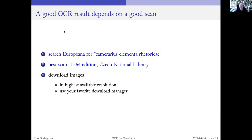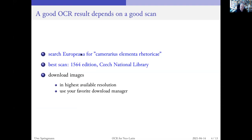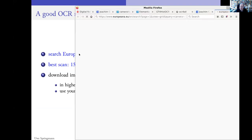A good OCR will always depend on a good scan. How do you find a good scan? Some of them are linked from the Opera Camerarii page. But every day new scans become available. And the best thing you could do is — if you have some specific example — just search Europeana, our common European library institution. Most European libraries give their holdings or at least the catalog items to Europeana.